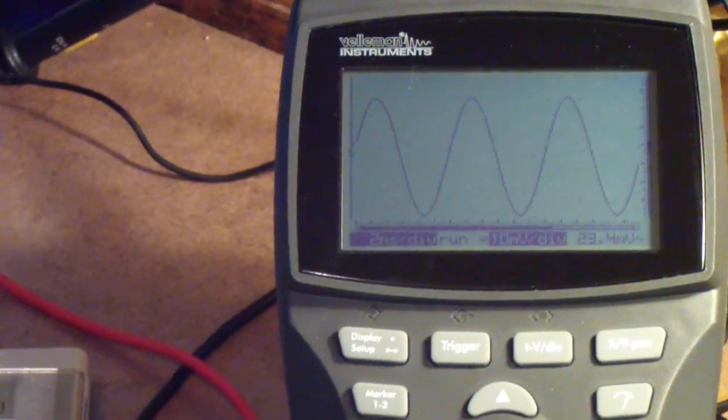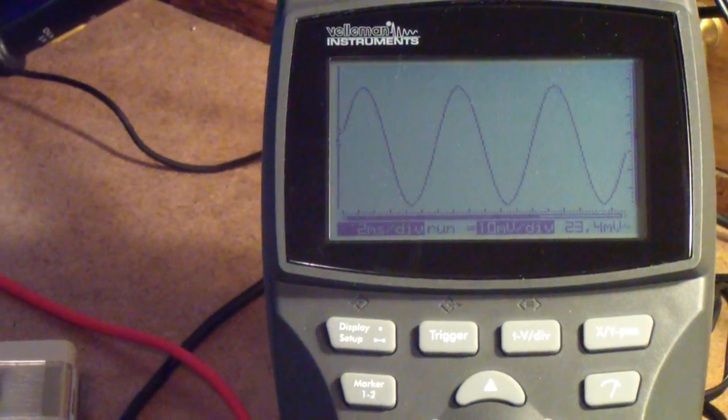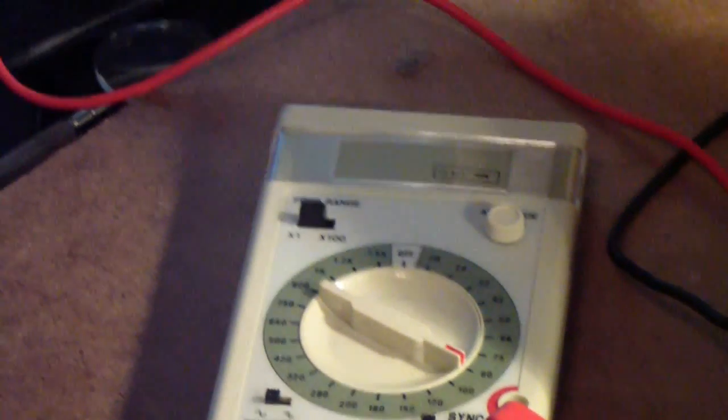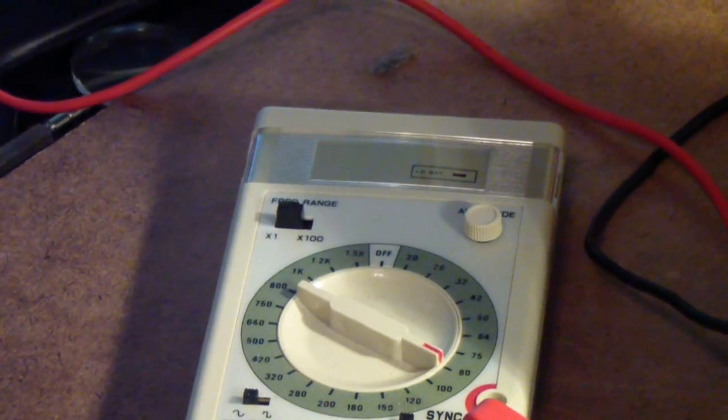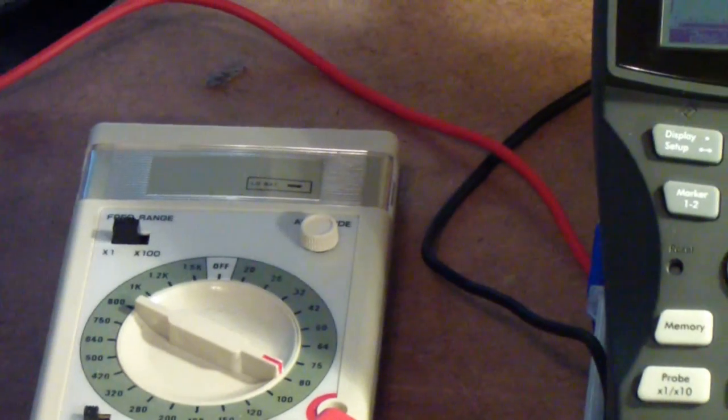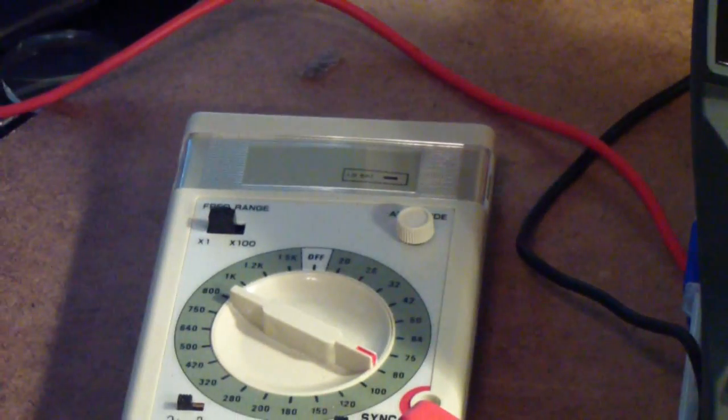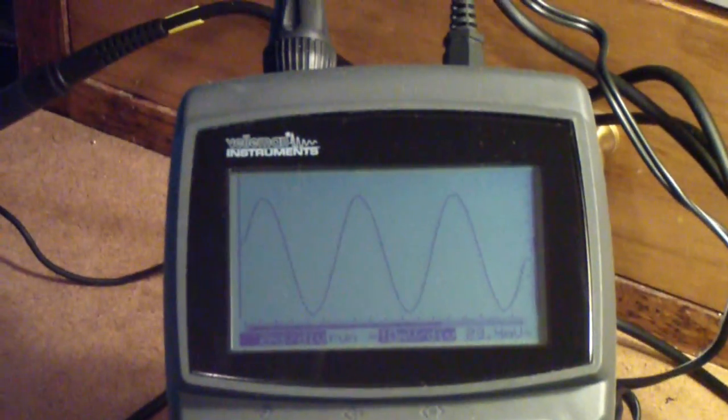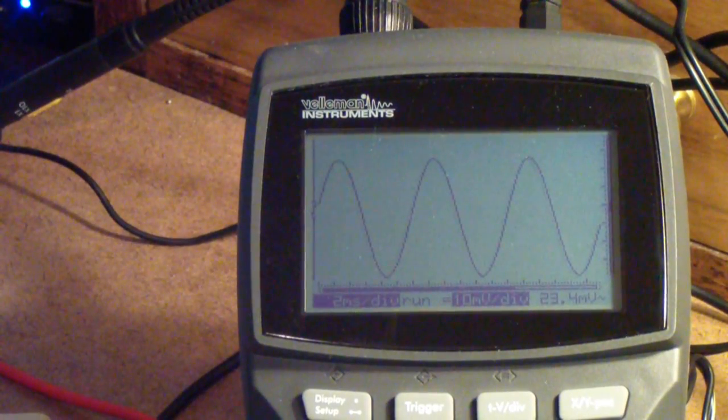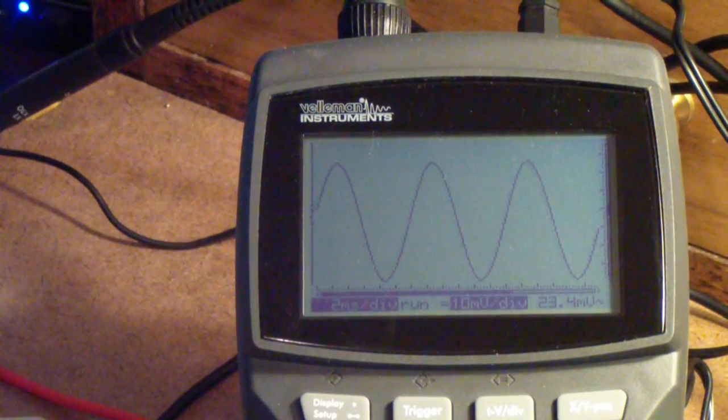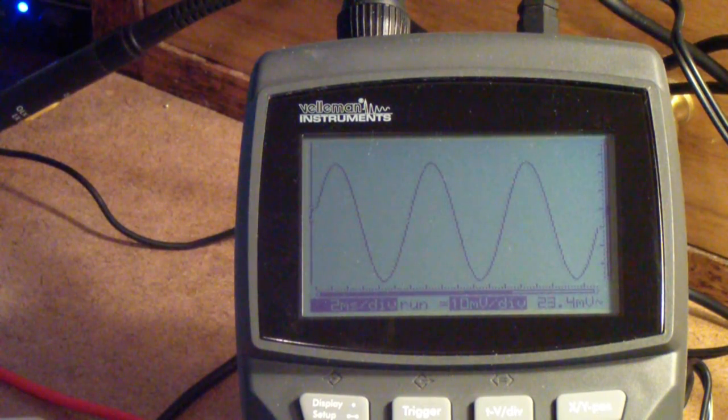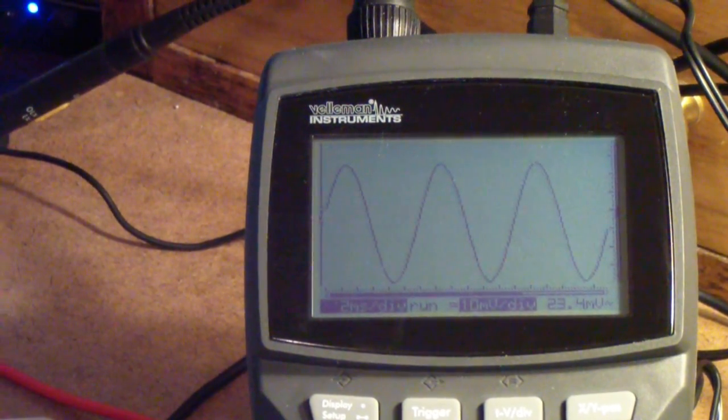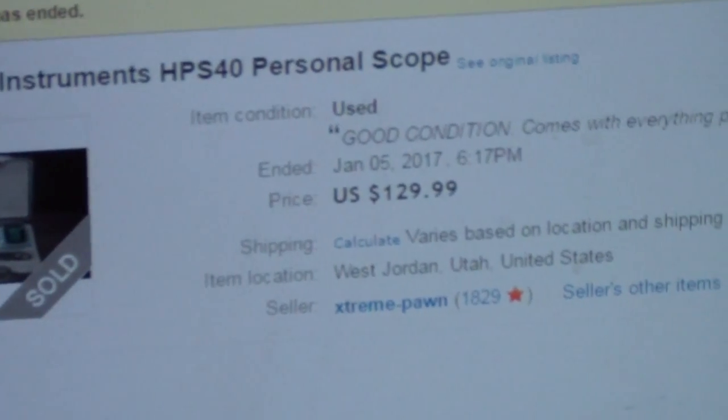Now, what we're doing on the analog discovery automatically, you can do manually with a setup like this. On the left is a small audio generator. I think it goes to 100 kilohertz or maybe a little higher. It'll do sine and square wave. I think it cost about $50. This Velleman HPS 40 is an older oscilloscope that I bought many years ago. I found one recently online for $129.99.